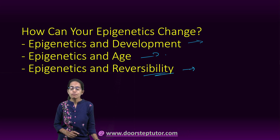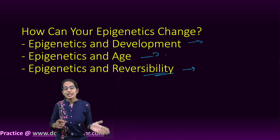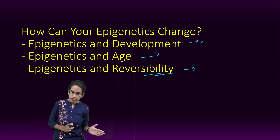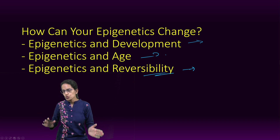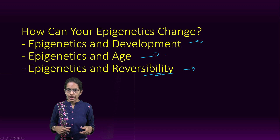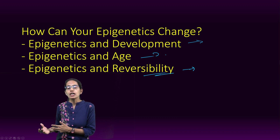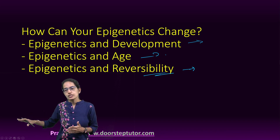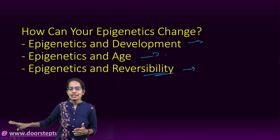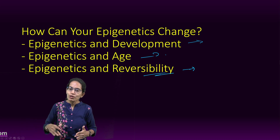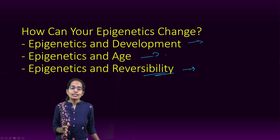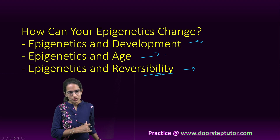The third factor is reversibility. Epigenetic changes caused by behavior and environment can often be reversed. For example, a smoker has a change in the AHRR gene. When the person stops or reduces smoking, there is a reversible change due to the change in behavior and environment. So the key factors affecting epigenetic change are development, age, and reversibility.